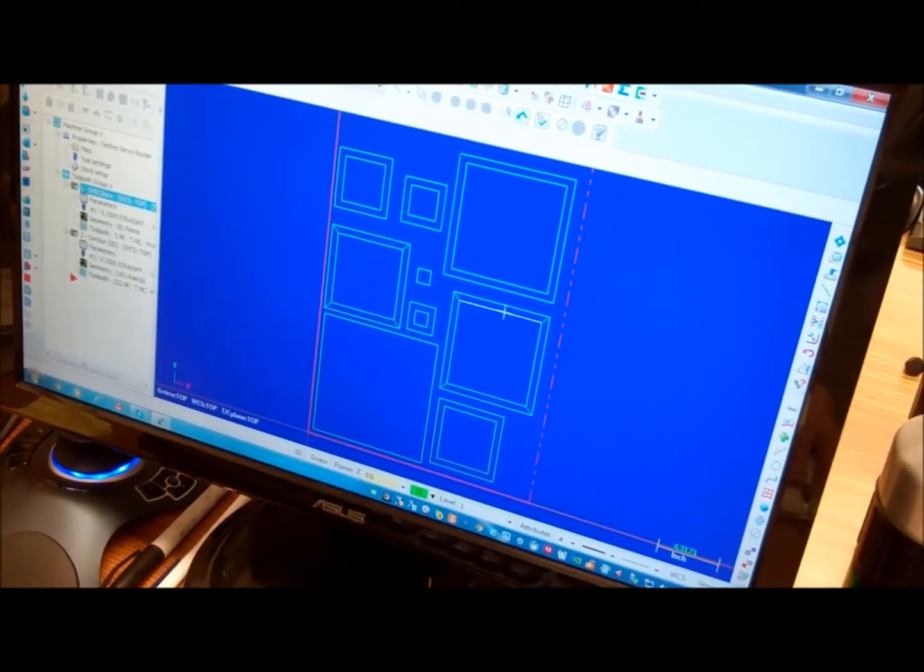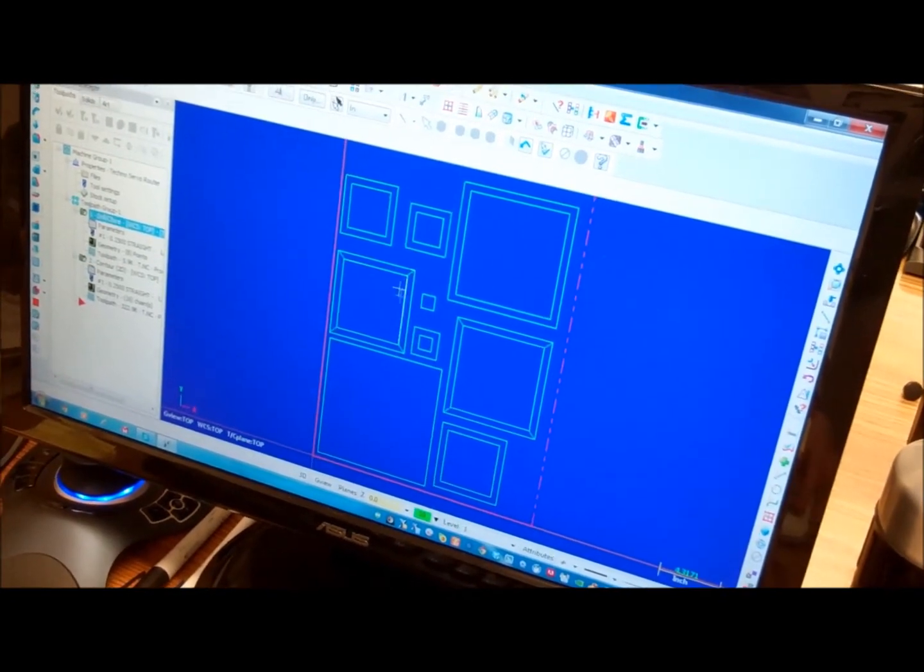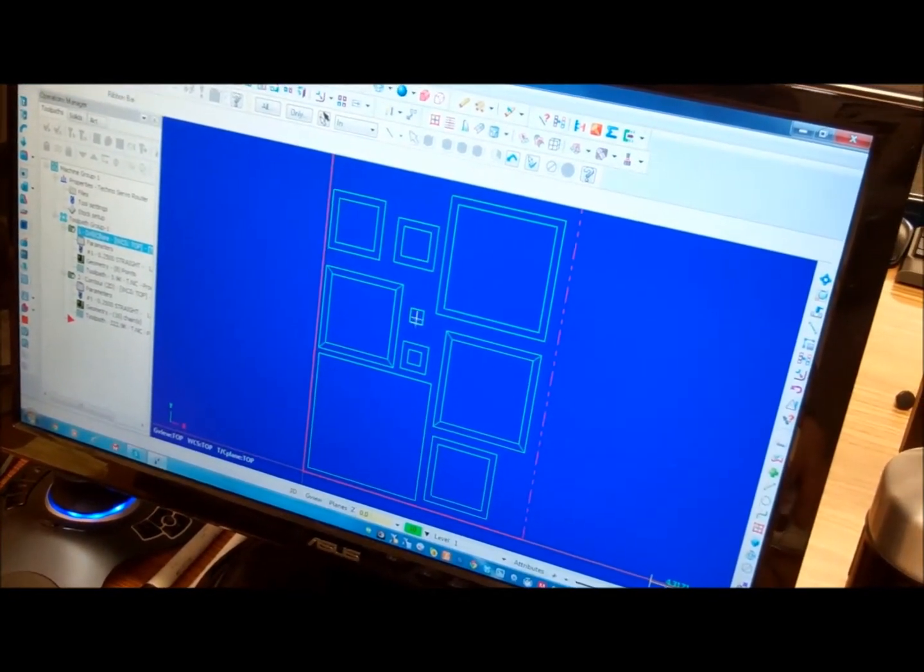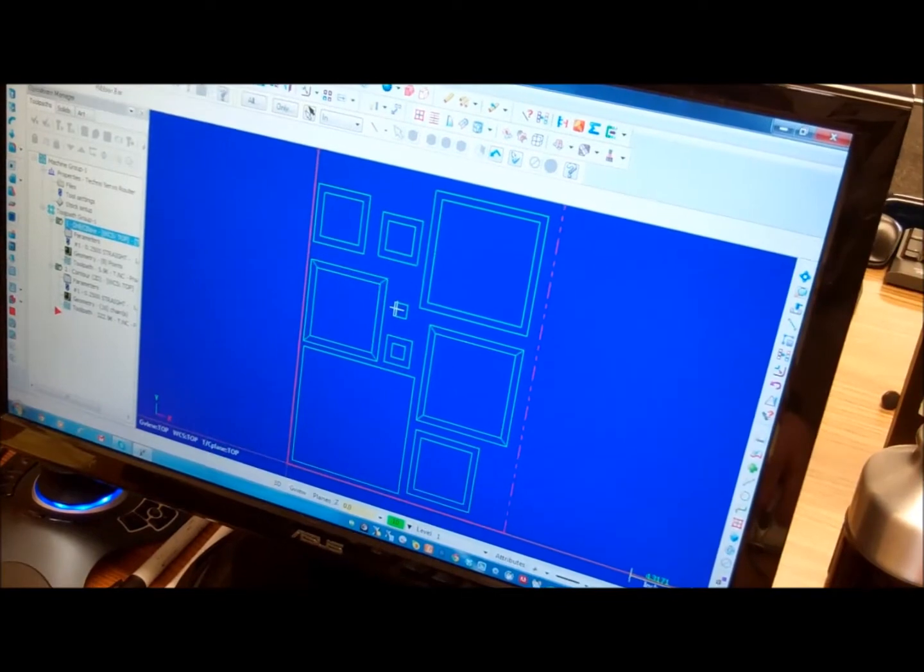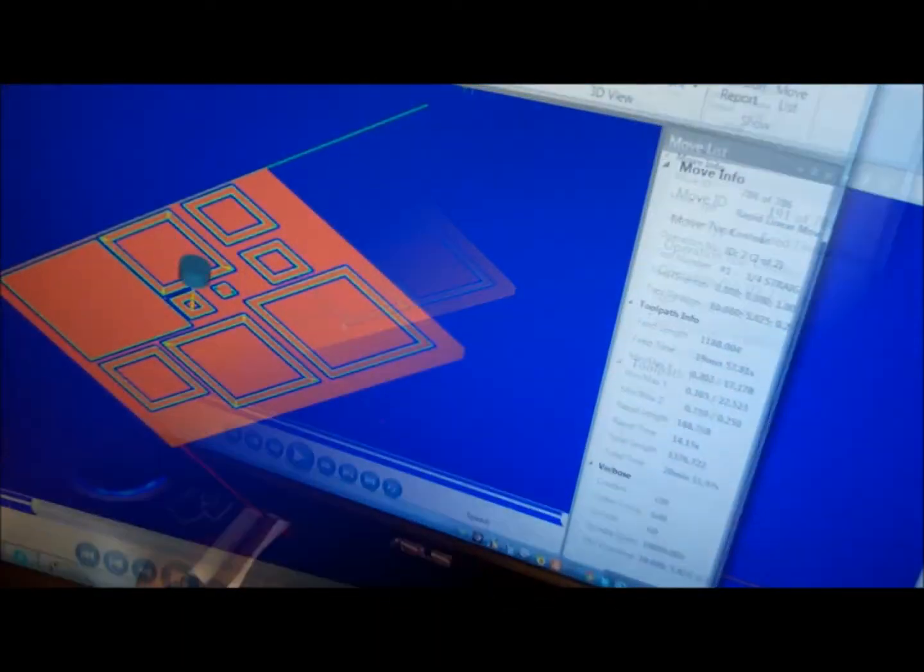Ten, nine, eight, seven, six, five, four, three, two, one. That'll make like a pyramid. So Ryan's toolpathed it and then he's verifying it.